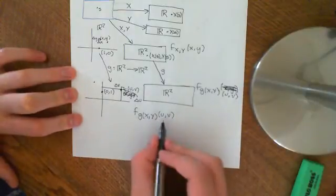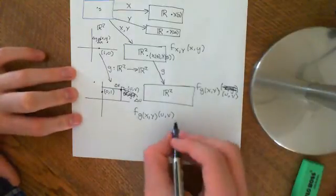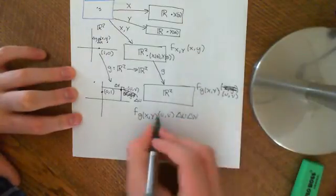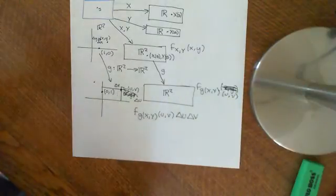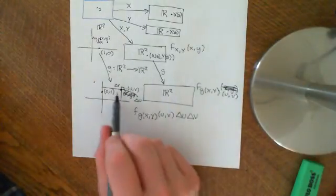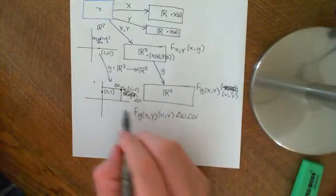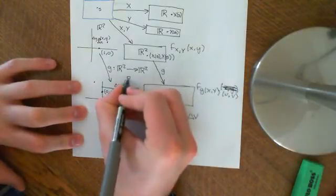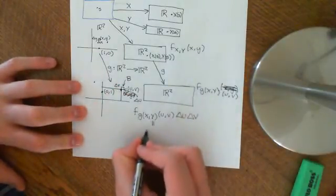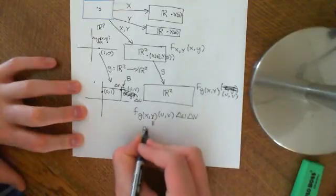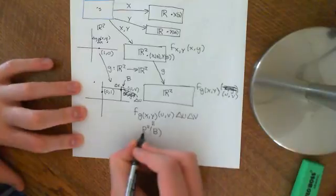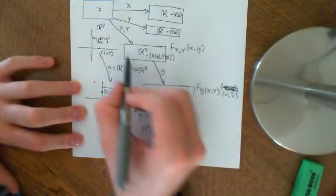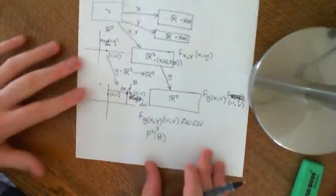By definition, what we want this to satisfy is that if we multiply the PDF by δu and δv — when δu and δv are absolutely tiny — we want that to approximately be the probability that the transformed variable is within that region. So I'll call this little box B, and we want this to equal the probability that you're within that little box, where P'' is the probability measure on the new probability space.